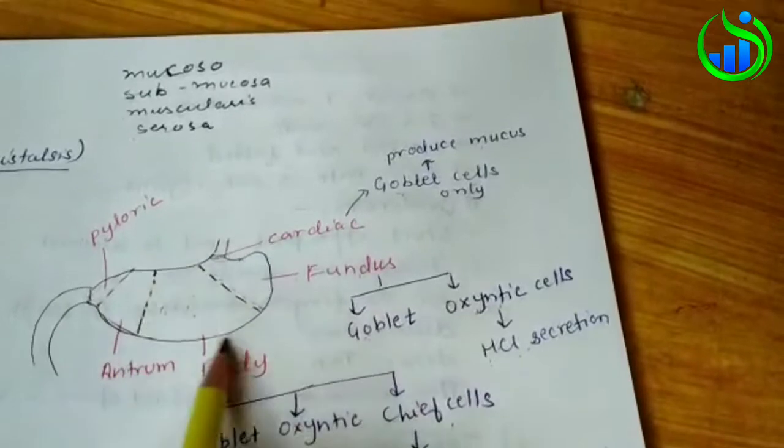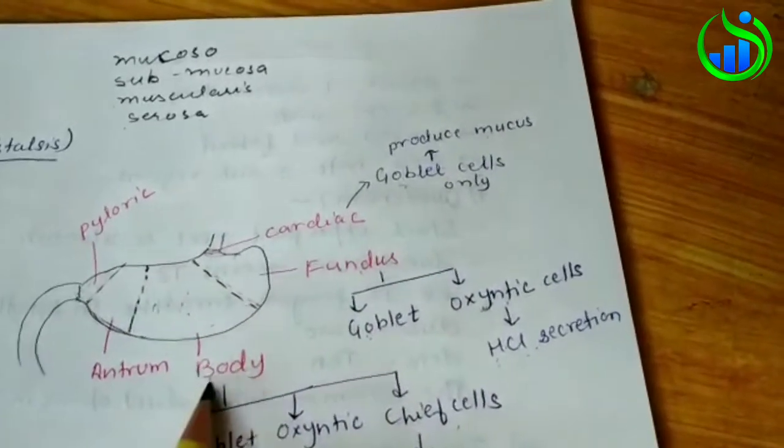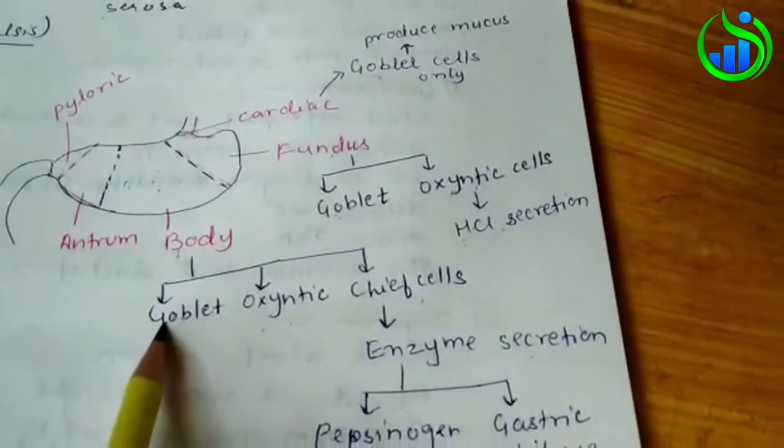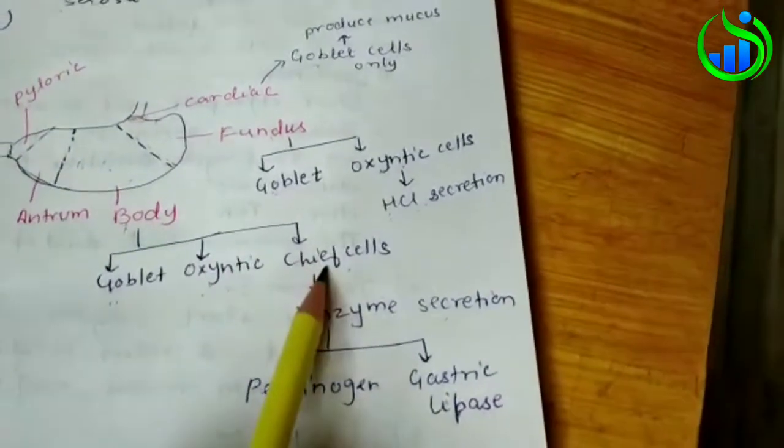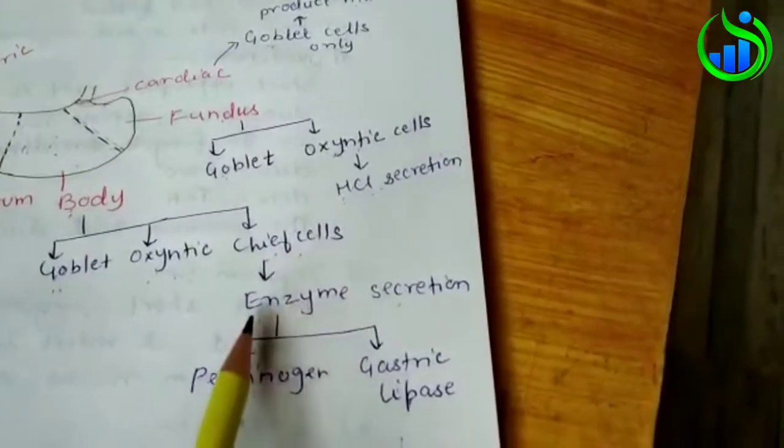The next layer is the body. The body contains goblet cells, oxyntic cells, and chief cells. The chief cells' main role is enzyme secretion. The enzymes include pepsinogen.